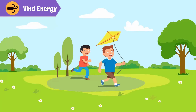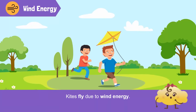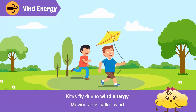Look, a kid is flying a kite. How is the kite held up in the sky? By wind energy. Moving air is called wind.